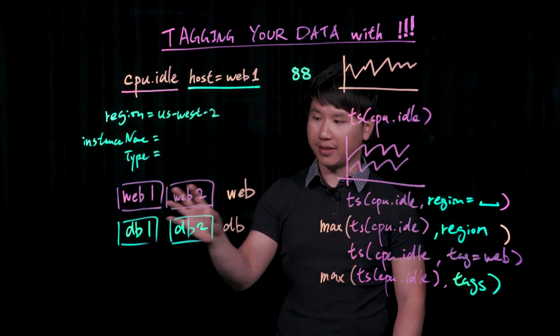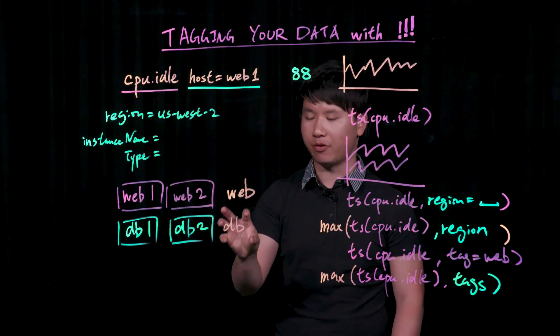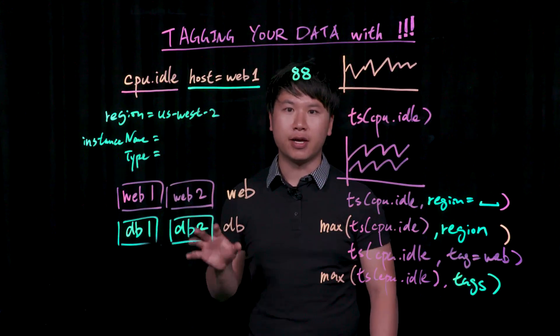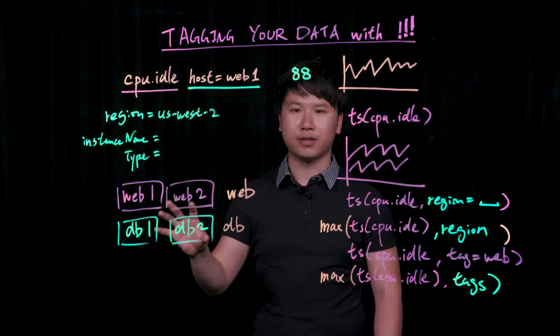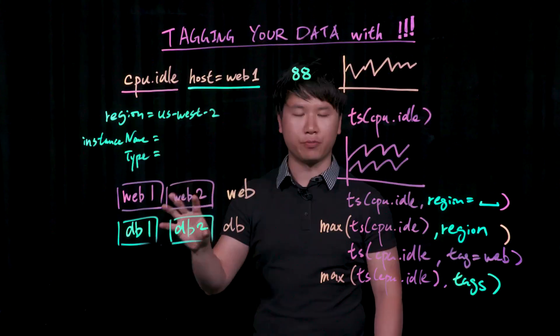It would produce two lines in this example, CPU idle max information for the web tier, as well as CPU idle max information for the DB tier. These are two powerful ways that you could analyze and group your data, both from using point tags and using source tags as an outside ingestion kind of way to group hosts together.